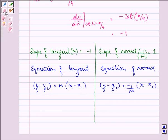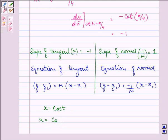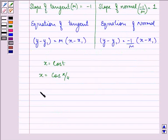First of all we know that we have x equal to cos t. So x at the value of t that is pi by 4 we have cos pi by 4. So that means the value of x is cos pi by 4 that is 1 by root 2.